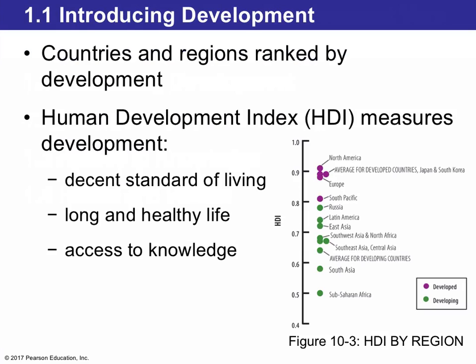Let's introduce what development means. For a country to be developed, we rank them using an index called the HDI, or the Human Development Index. This index has three parts: the standard of living, or how well people live in a country; a healthy or wealthy lifestyle; and access to knowledge. On the right, you can see those three indexes combined into one number, which is the HDI, with developed countries shown in purple.